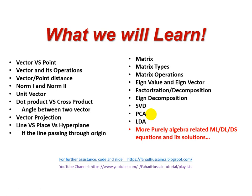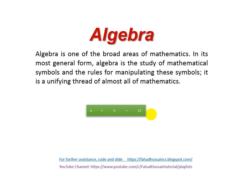So we will start the first topic. What is Algebra? Algebra is one of the broad areas of mathematics. In its most general form, algebra is a study of the mathematical symbols and the rules for manipulating these symbols. It is a unifying thread of almost all of mathematics. In simple words, in Algebra we discuss some notations or signs which we want to find unknown values.